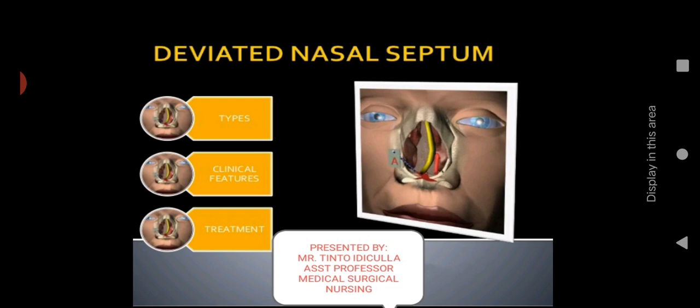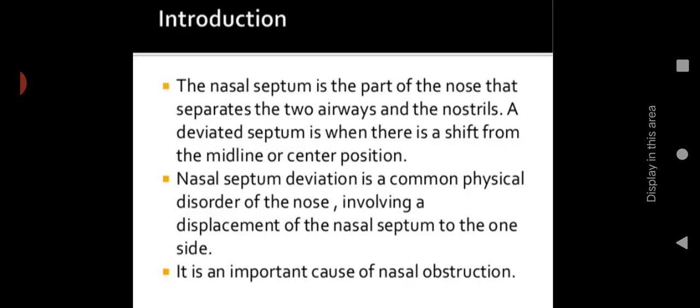It is an anatomic abnormality. We will start with the introduction. The nasal septum is a part of the nose that separates the two airways and the nostrils. A deviated septum is when there is a shift from the midline or center position.